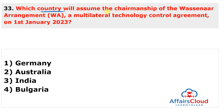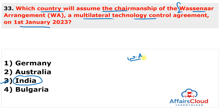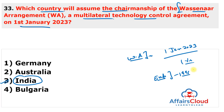Question 33: Which country will assume the chairmanship of the Wassenaar Arrangement — a multilateral technology control agreement — on 1st January 2023? The answer is India. India will assume the chairmanship for one year; Ireland's ambassador handed over the chairmanship to India. The Wassenaar Arrangement, established in 1996, monitors transfers of conventional weapons and dual-use goods, has 42 members, and operates by consensus.